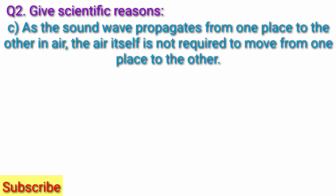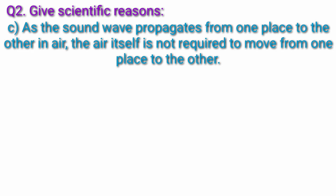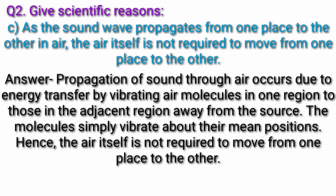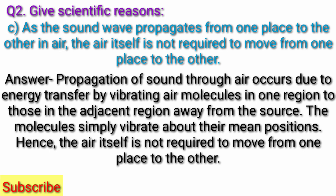Question C: As the sound wave propagates from one place to the other in air, the air itself is not required to move from one place to the other. Answer: Propagation of sound through air occurs due to energy transfer by vibrating air molecules in one region to those in the adjacent region away from the source. The molecules simply vibrate about their mean positions. Hence, the air itself is not required to move from one place to the other.